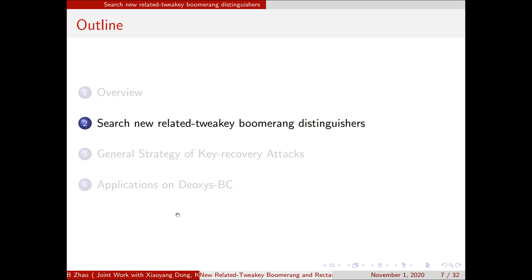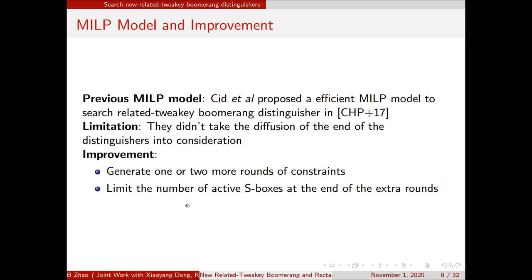For the second part, we choose to search new related-tweakey boomerang distinguishers. In ASIACRYPT, CID-80 had proposed an efficient MILP model to search related-tweakey boomerang distinguishers in CHP-17. But they didn't take the diffusion at the end of the distinguishers into consideration. So we make two improvements as follows. First, we generate one or two more rounds of constraints. And then we limit the number of active S-boxes at the end of the extra rounds.